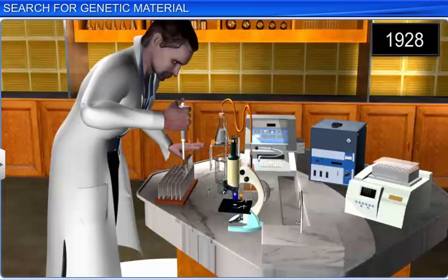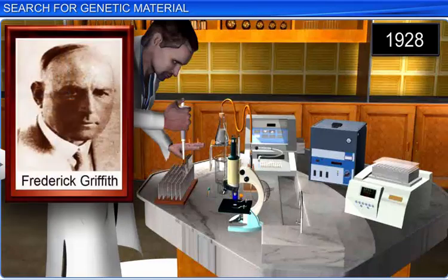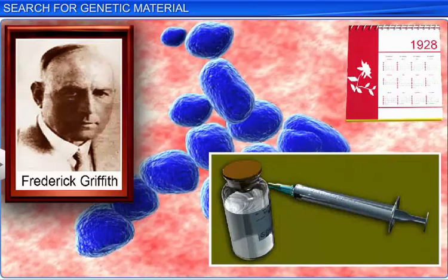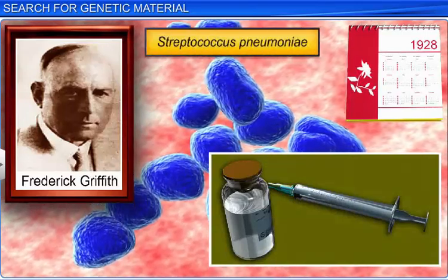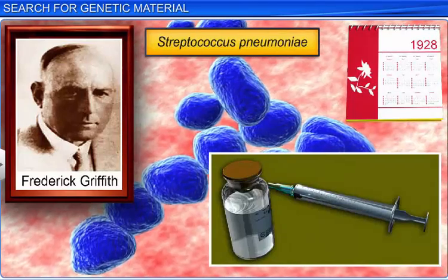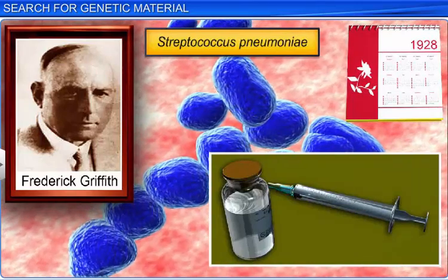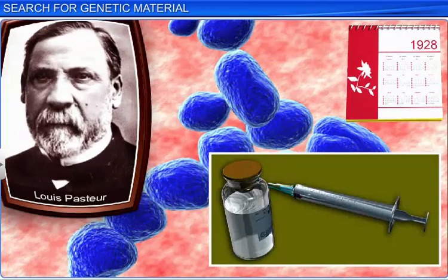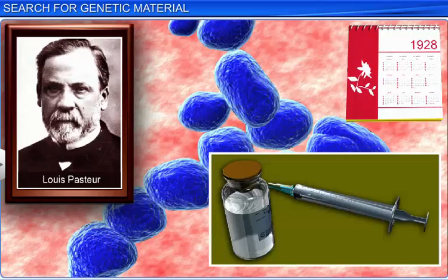However, in 1928, Frederick Griffith, a British scientist, conducted an experiment that accidentally demonstrated the transformation of genetic material in bacteria. In fact, Frederick Griffith was in the process of developing a vaccine against the bacteria Streptococcus pneumoniae, that caused pneumonia, by inoculating the dead microbes, along similar lines of Louis Pasteur's experiments on vaccination.